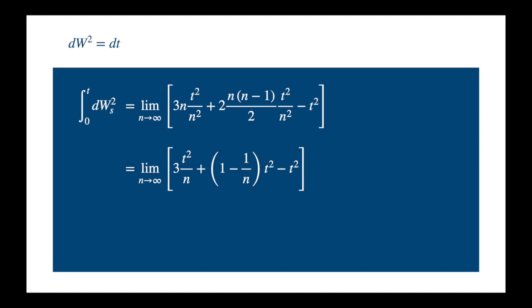And now as n becomes very large, 1 divided by n goes to 0, and then the t squared appears with a plus and minus sign, so we get 0.